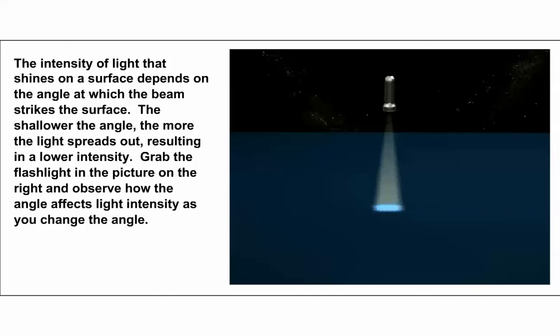We'll begin with a situation where our virtual flashlight is pointed directly at an object, so the light comes in perpendicularly and strikes the object. You can see that the light is fairly bright, and it's spread over a small area, so the amount of light per unit area is maximized and the light is intense as it strikes the object.